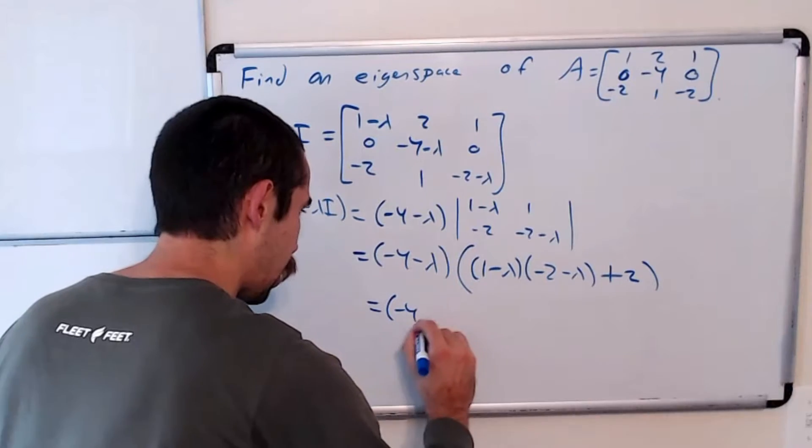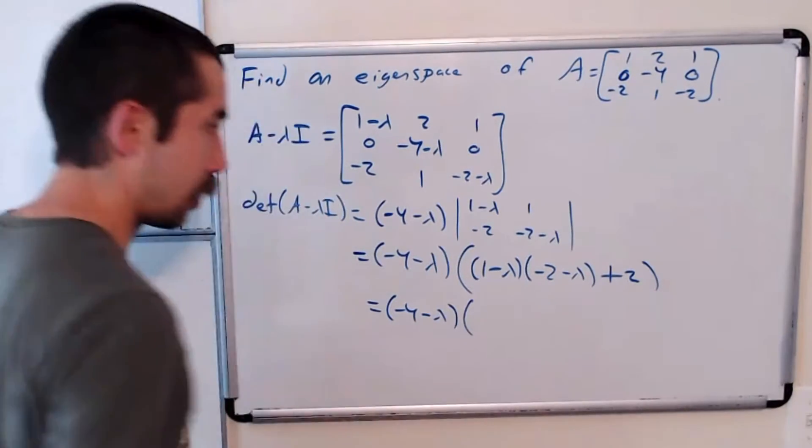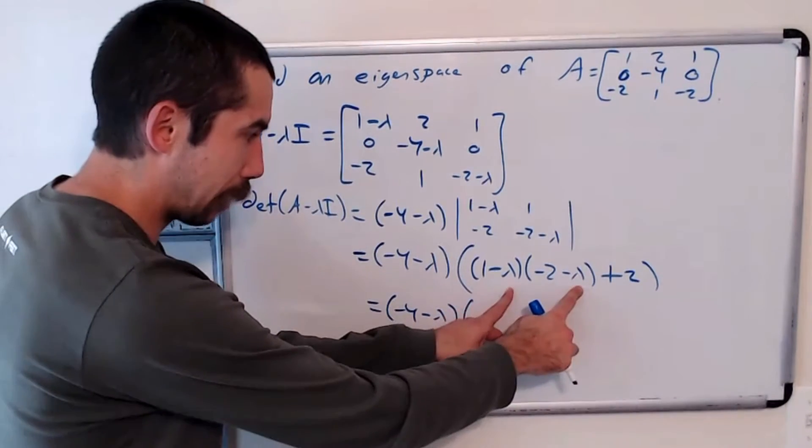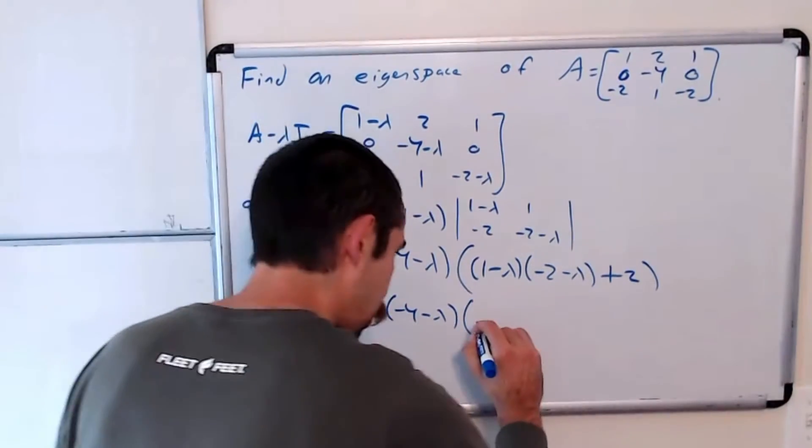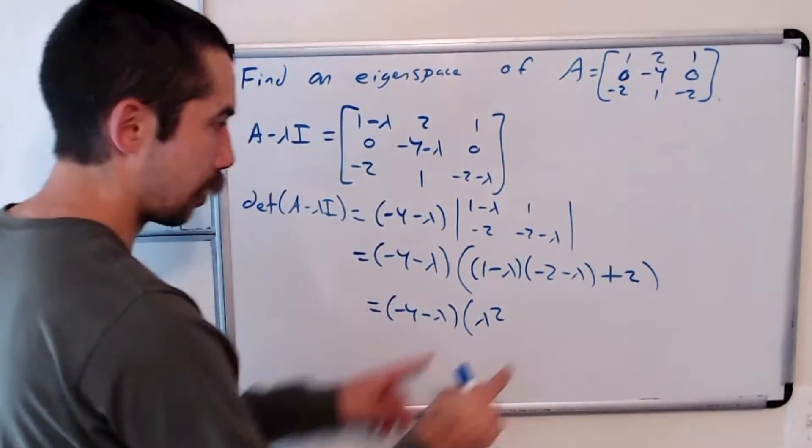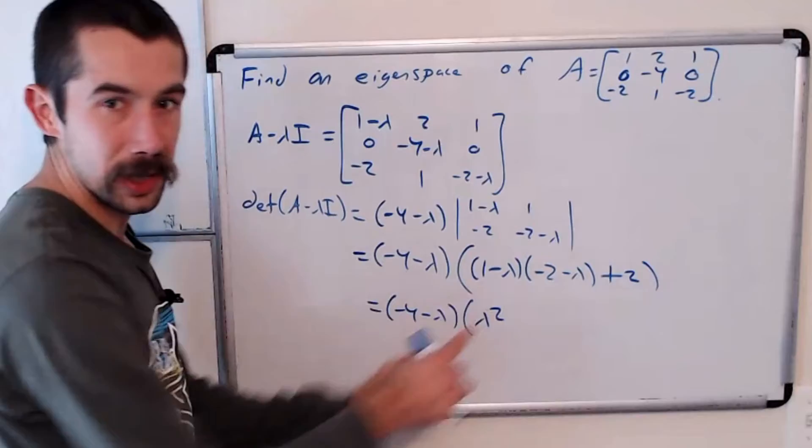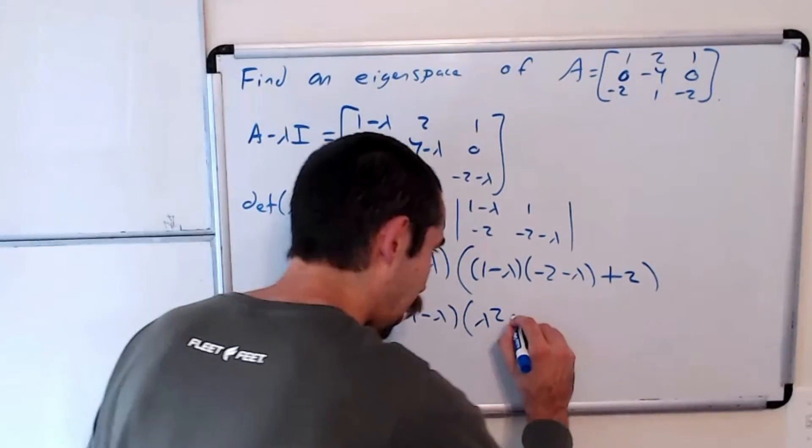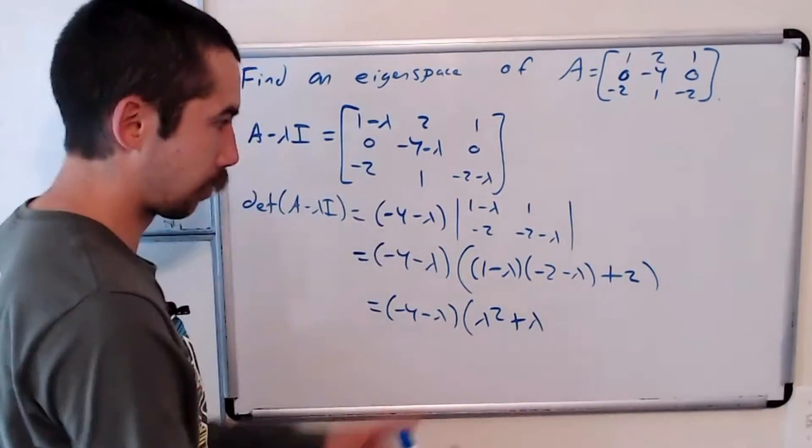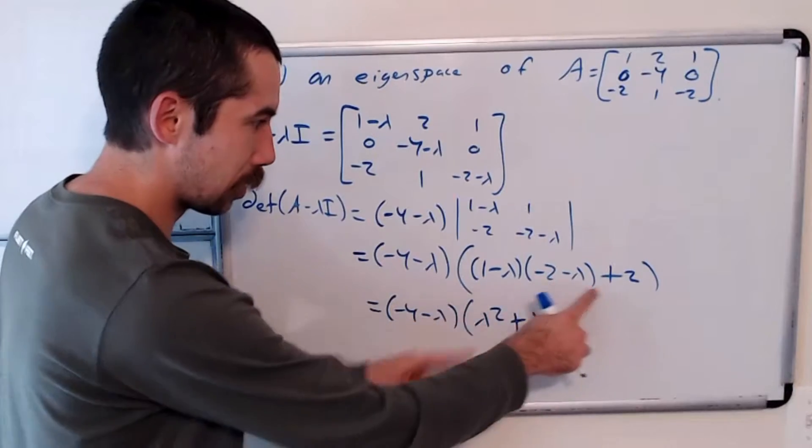This works out to negative 4 minus lambda times lambda squared minus lambda minus 2 plus 2.